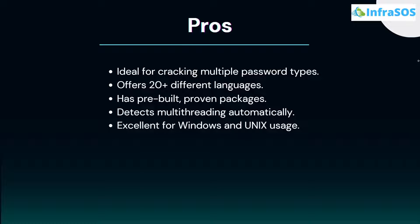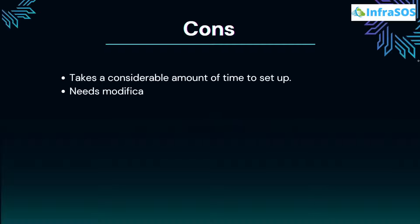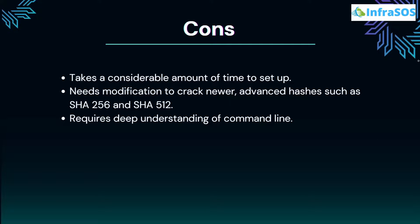Quickly going over the cons of John the Ripper: it takes a considerable amount of time to set it up, and it needs modification to crack newer advanced hashes such as SHA-256 or SHA-512.